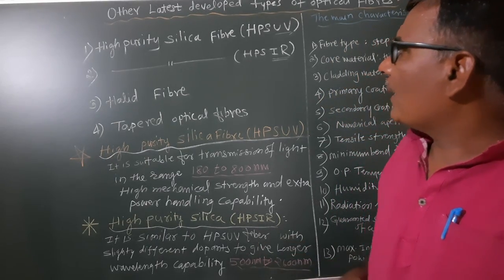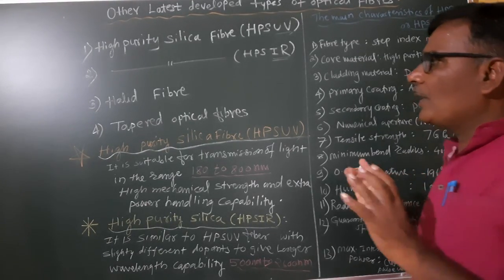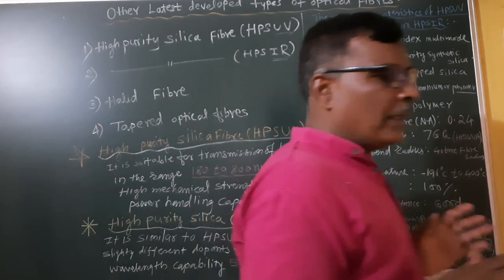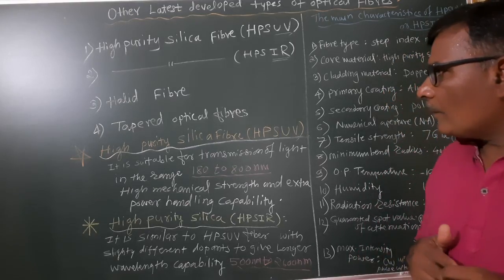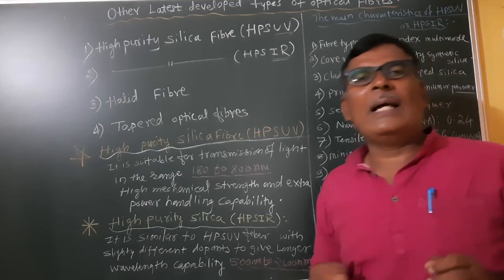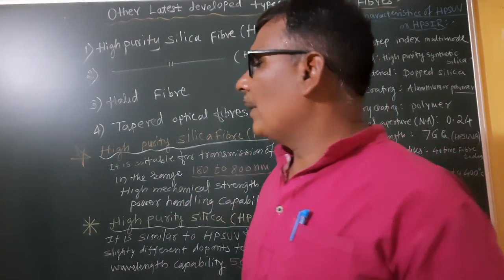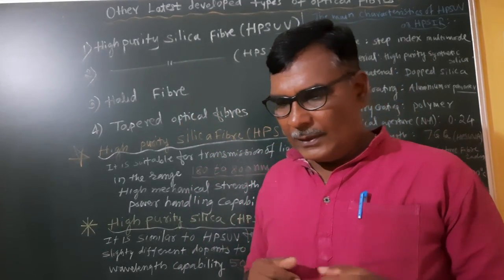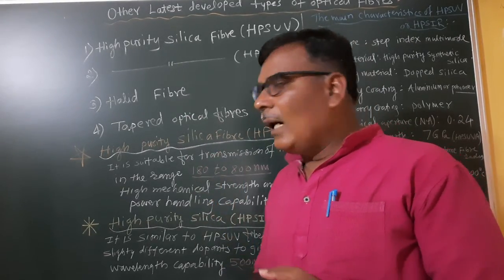These fibers have important characteristics, and we need to understand how they differ from each other — HPSIR, HPSUV, halide fiber, and tapered fiber. In this lecture we are going to discuss HPSIR and HPSUV, and in the next lecture we will discuss halide fiber and tapered fiber.